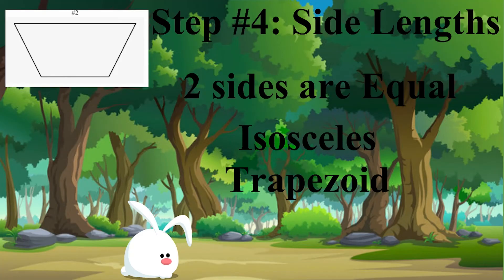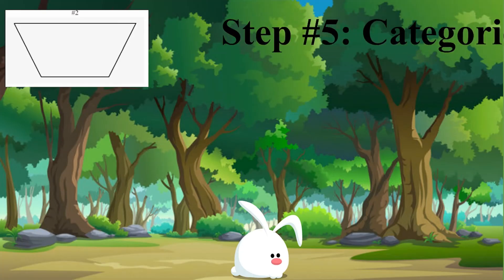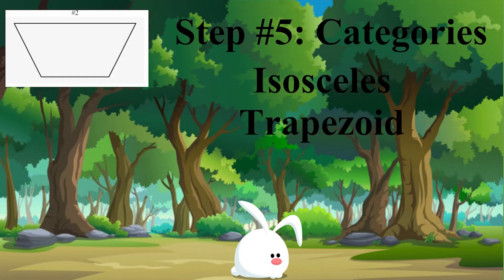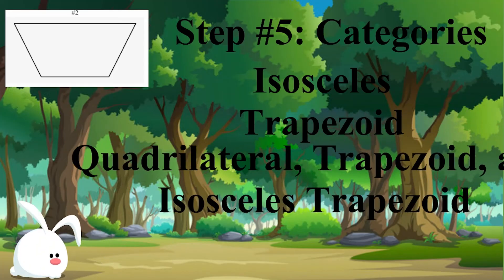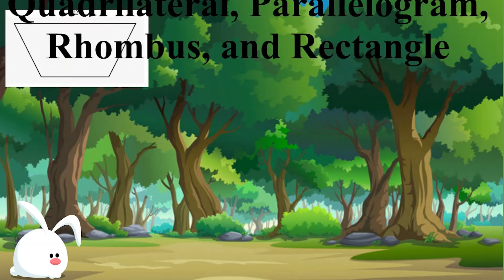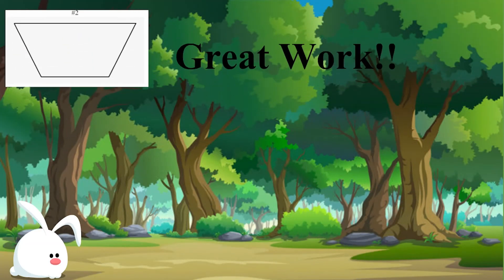And we can put it in that category. Pretty cool, right? So now, step number five, we can put it in all the categories we know it's already in. This is an isosceles trapezoid, and based off the hierarchy chart we can fit it into the quadrilateral, trapezoid, and isosceles trapezoid categories. Not too bad, right? You guys did awesome today. Great work, once again.